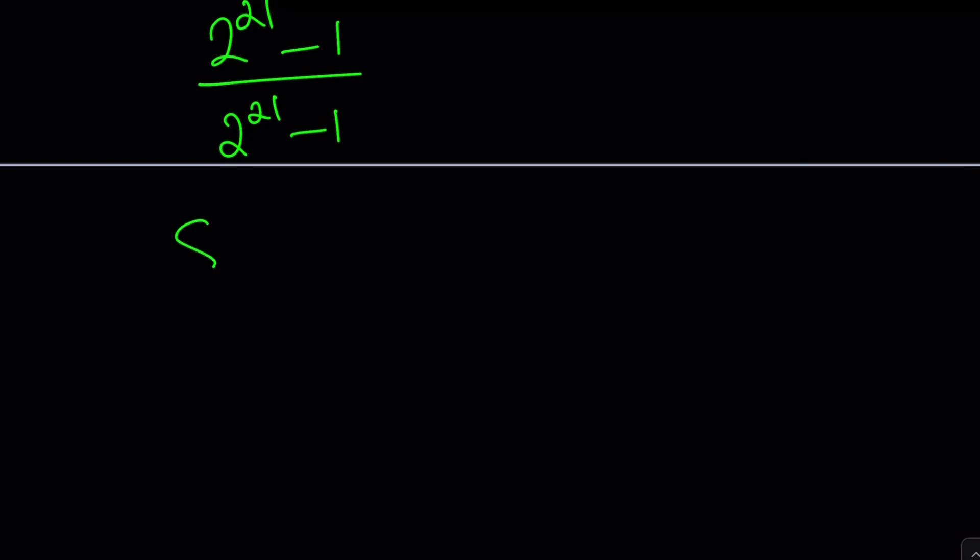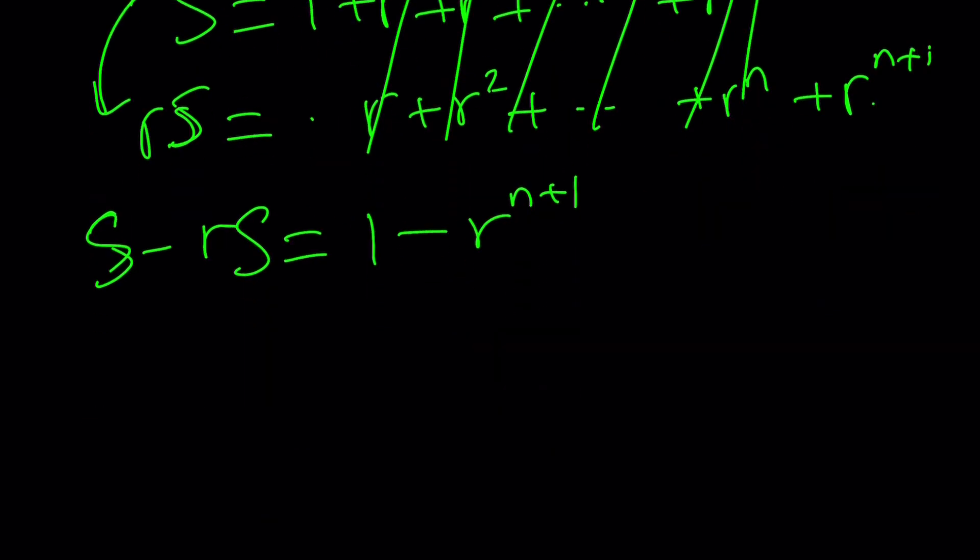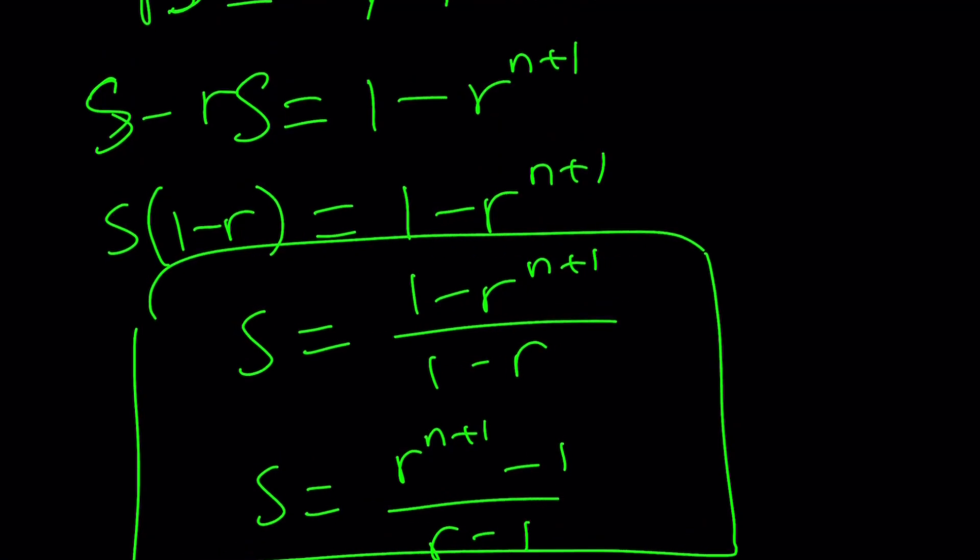But again, quickly, if you want to know how this works, you can go ahead and write it like this, all the way up to R to the N, and then multiply both sides by R. RS is going to give you R plus R squared, and then R to the N plus R to the N plus 1. So you're going to be missing the 1, but you're going to have an extra term. And when you subtract S minus RS, everything is going to cancel out here. You're going to end up with 1 minus R to the N plus 1. And if you factor out S and divide both sides by 1 minus R, you're going to get the formula. But uh-oh, isn't that backwards? Yes, if you negate both the top and the bottom, you're just going to get a different version. Both versions are fine, and you could probably use the first one if R is less than 1. It's a little bit more convenient.